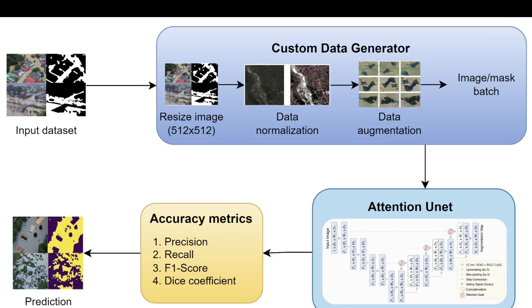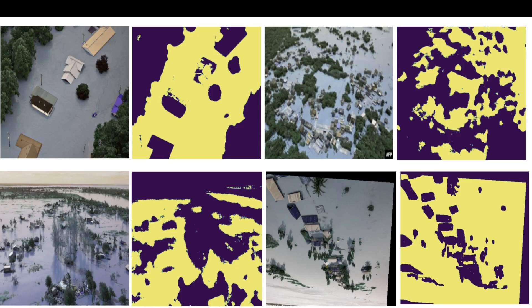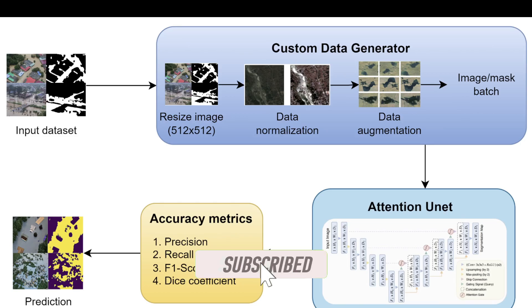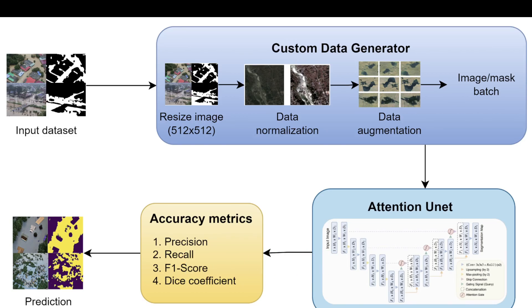This model is quite accurate, as shown in the previous slide. It nicely detects water bodies, flooded regions, and non-flooded regions from random imagery downloaded from Google. It achieves an F1 score between 80 to 90 percent and an accuracy above 90 percent. Based on this model, we can easily perform predictions.